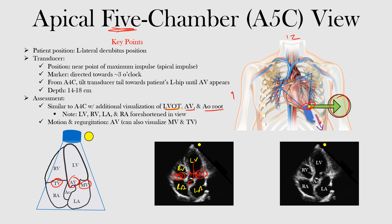Note that the left ventricle, right ventricle, left atrium, and right atrium are foreshortened in this view — so those four chambers are foreshortened. What we want to assess here is the mitral valve and tricuspid valve, and we can look at the motion and if there's any evidence of regurgitation at the aortic valve, right there in the center.